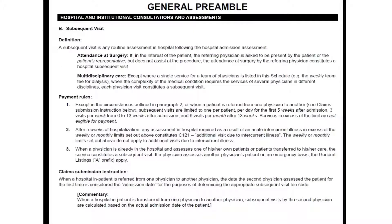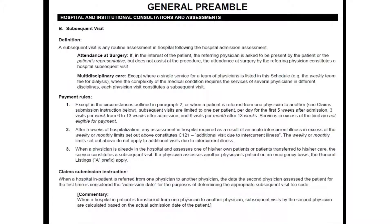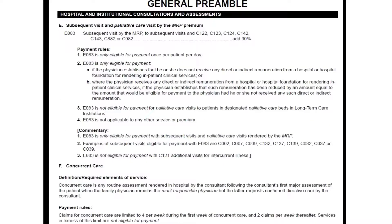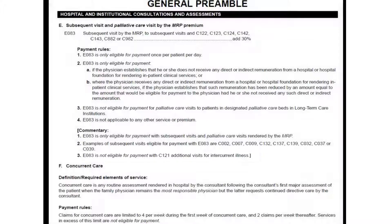Whenever the subsequent visits have reached the weekly or monthly limit after five weeks of hospitalization, an intercurrent illness C121 can be billed. Please note the diagnostic code for the C121 needs to be different than that of the subsequent visits. Keep in mind, the E083 MRP Premium cannot be added to the C121.